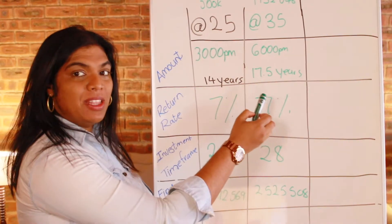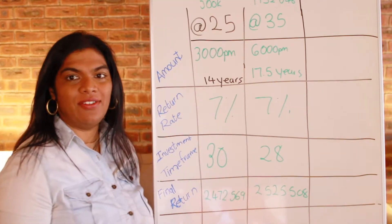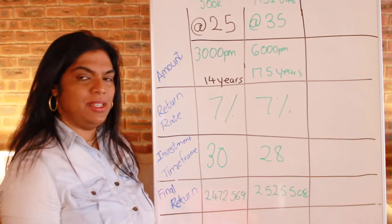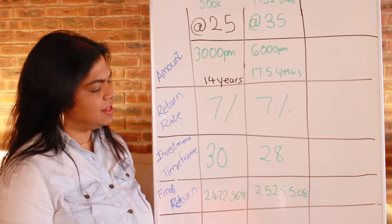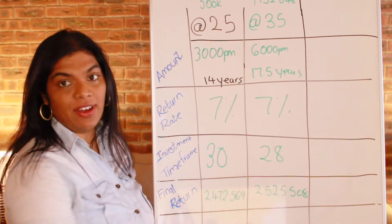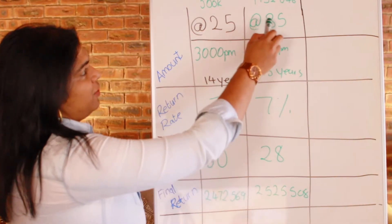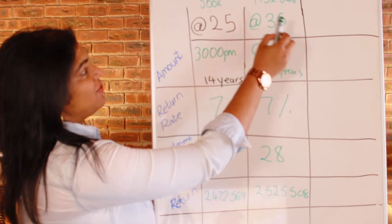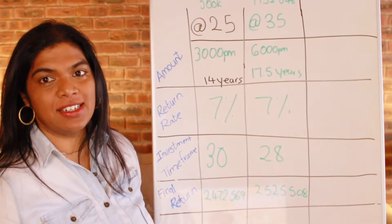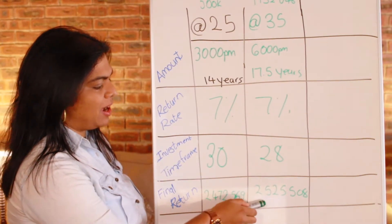So you have to invest 6,000 rand a month for a period of 17 and a half years. Assuming a return rate of 7% and we leave this investment in there for 28 years, that would give you a result of 2,525,508 rands. But the big difference here is at 35, you will have to make a total investment of 1,552,000 rand some change in order to get an on-par investment.